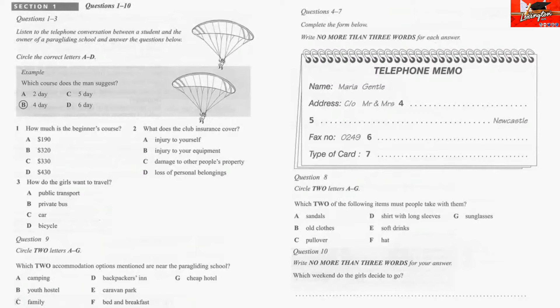The woman says they would like to try the beginner's course, so the answer is B, the four-day beginner's course. Now we shall begin. You should answer the questions as you listen because you will not hear the recording a second time. Listen carefully and answer questions 1 to 7. Well, we've got the introductory course which lasts for two days. Okay. Or there's the four-day beginner's course which is what most people do first. I'd tend to recommend that one. And there's also the elementary pilot course which takes five to six days depending on conditions. We might try the beginner's course.